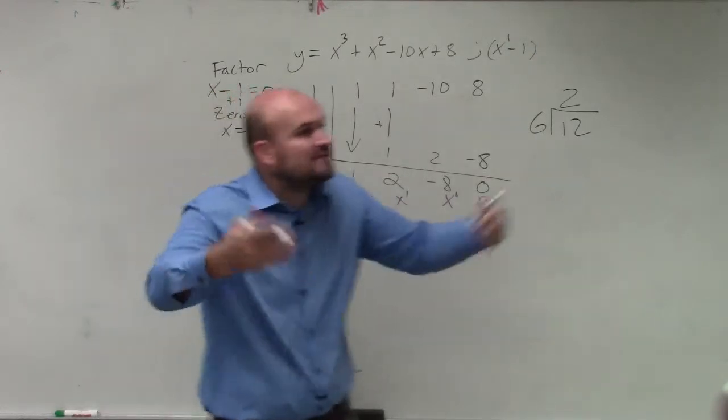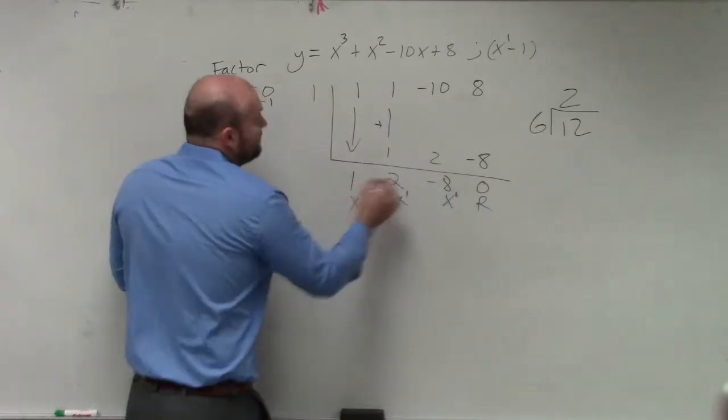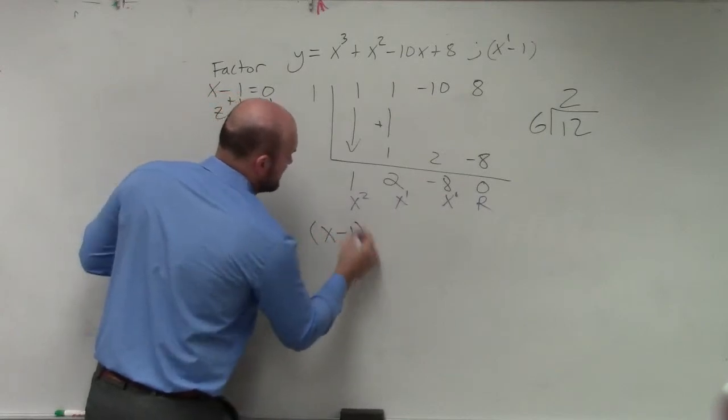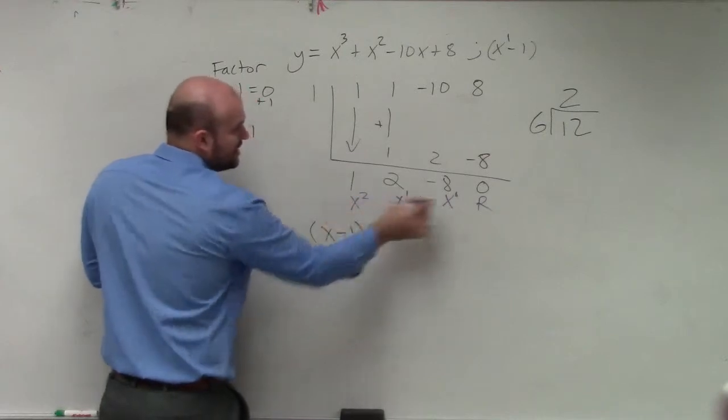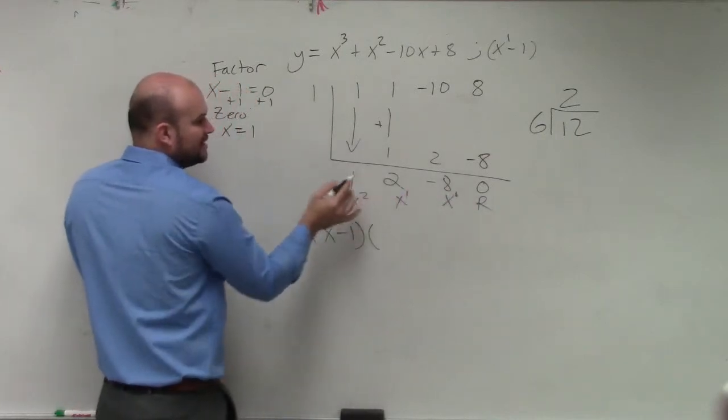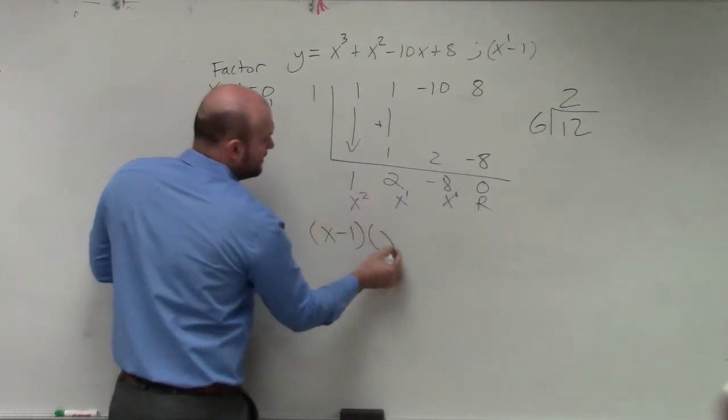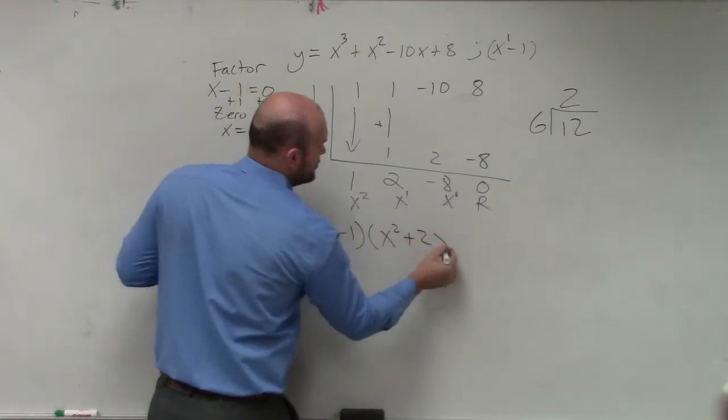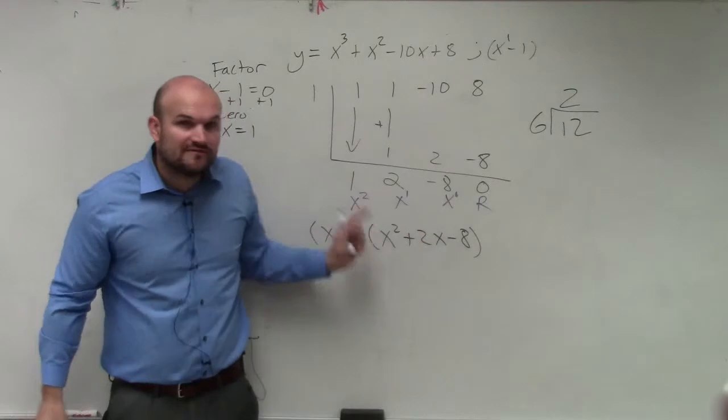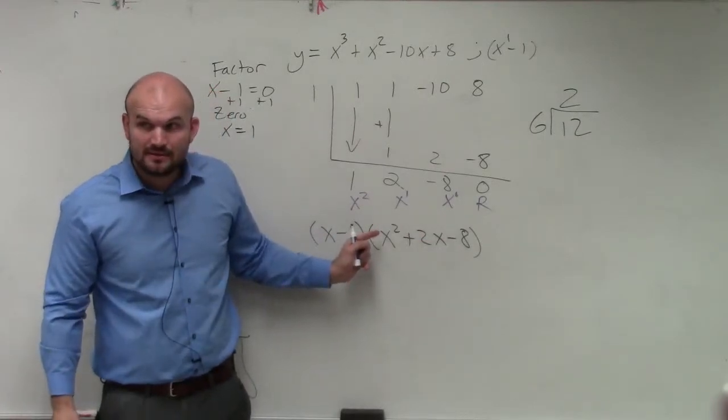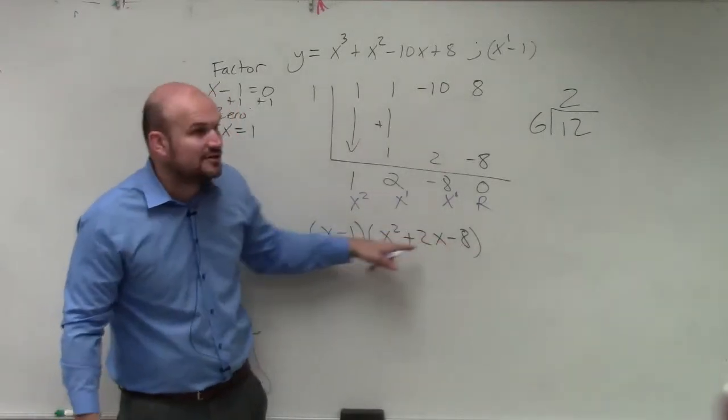They're asking you to completely factor the polynomial. So therefore, we know that x minus 1 is a factor because it evenly divided. And then the answer, which in this case is your remainder, constant, linear, and quadratic. That's going to be x squared plus 2x minus 8. That is also a factor, correct? Now can we factor this further down?